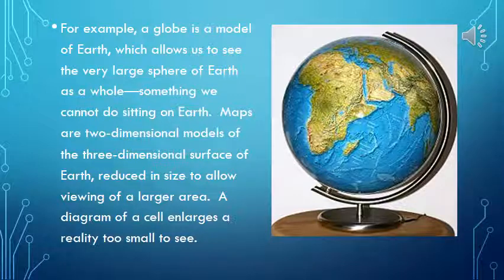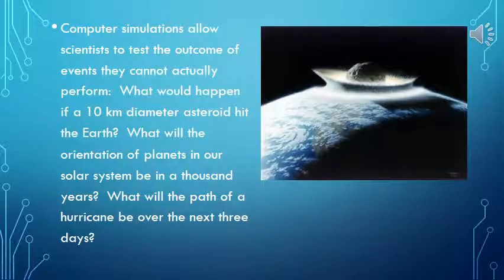For example, a globe is a model of Earth, which allows us to see the very large sphere of Earth as a whole — something we cannot do sitting on Earth. Maps are two-dimensional models of the three-dimensional surface of Earth, reduced in size to allow viewing of a larger area. A diagram of the cell enlarges a reality too small to see.